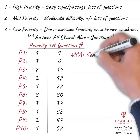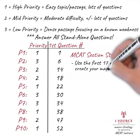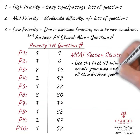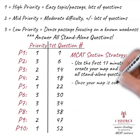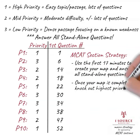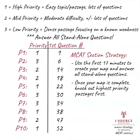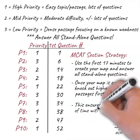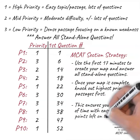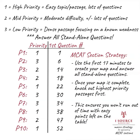From this point, you simply use the map to determine the order in which you should address the passages, starting with the highest priorities to secure the easiest points while building the confidence needed to tackle the questions you've already deemed likely to be more challenging. The beauty of this approach is that if you end up running out of time — a problem that even the best of us encounter — you're unlikely to do so with easy questions left on the table. This means that if you are forced to sacrifice due diligence on a few questions, they are more likely to be questions you would have struggled with anyway.